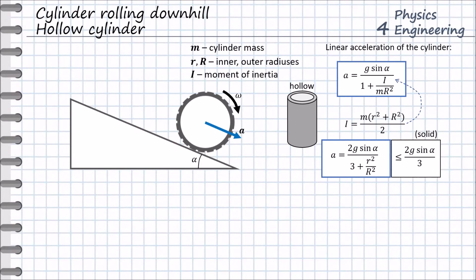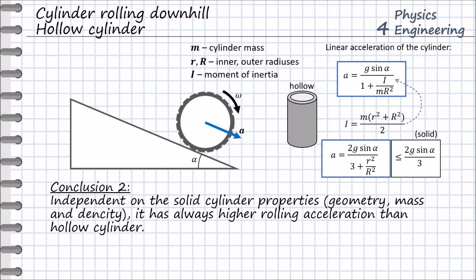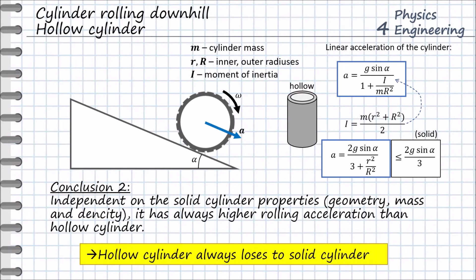These two accelerations are equal to each other when the inner radius of the hollow cylinder is equal to zero. Therefore, the conclusion is the following: independent of the solid cylinder's properties — its geometry, mass, and density — it always has a higher rolling acceleration than the hollow cylinder. In other words, the hollow cylinder always loses to the solid cylinder during races on the slope.